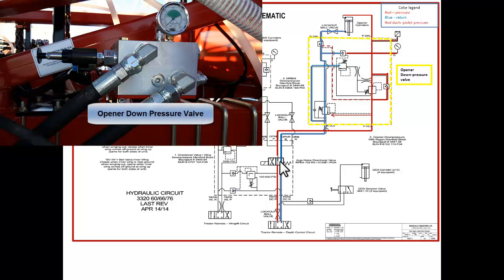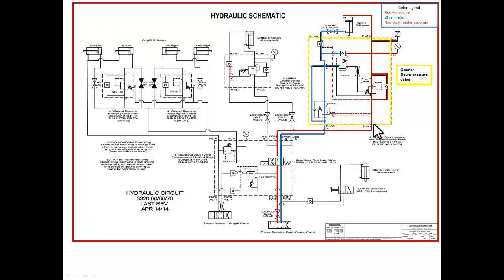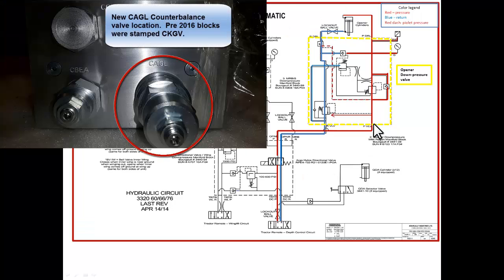When you focus in on the opener down pressure valve, you would notice that there are three valves: two pilot operated check valves and one standard check valve. For model year 2016, we removed PO check valve CKGV and replaced it with a CAGL counter balance valve to help hold the openers up better. If you had openers that were dropping over a short period of time, you could replace the PO check valve with a new counter balance valve.